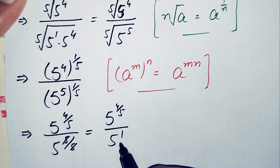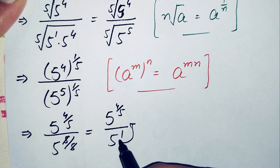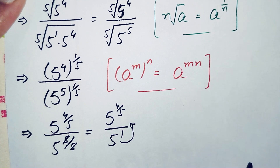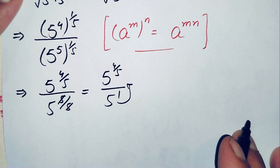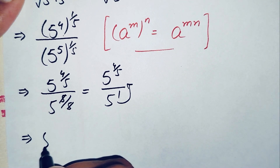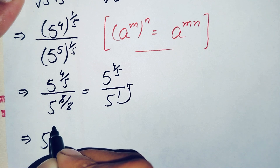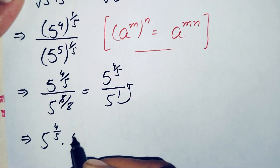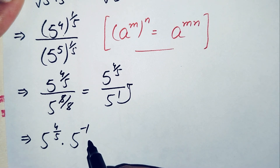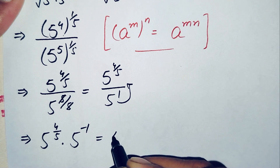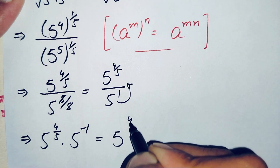Now in the numerator and denominator the base is the same, so we move 5 to the numerator and the sign of its power changes to negative. This becomes 5 raised to power 4 over 5 times 5 raised to power negative 1. Since the bases are the same, we add their powers: 4 over 5 minus 1.